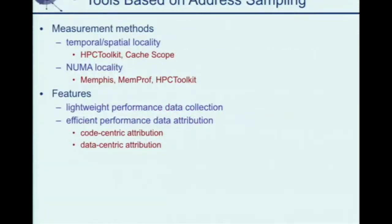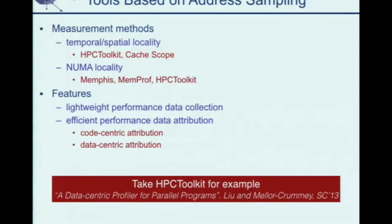Using these different address sampling mechanisms, we can build tools that identify temporal and spatial locality in the cache — tools like HPCToolkit and CacheScope — and also tools for NUMA problems, like Memphis, Memprof, and HPCToolkit. These tools have very low overhead, typically less than 10%, and can support efficient data attribution, providing both code-centric and data-centric attribution. I was highly involved in the HPCToolkit project, so I'll use it as an example to show how we built a performance tool based on different address sampling mechanisms.